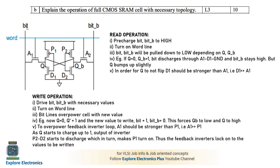For the write operation, whatever value we are writing into the RAM is passed from the bit line, and bit-bar will be the reverse. If we are writing 1, bit equals 1 and bit-bar equals 0. We turn on the word line, A1 and A2 turn on, the data from bit is available at Q, and Q equals 1 is stored. This connects to the input of the second inverter, whose output will be 0, which is consistent with bit-bar. One will be stored continuously.